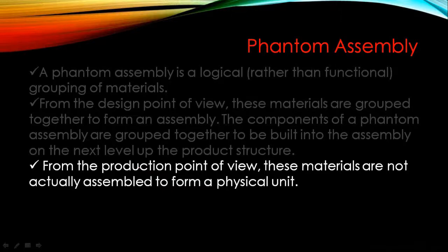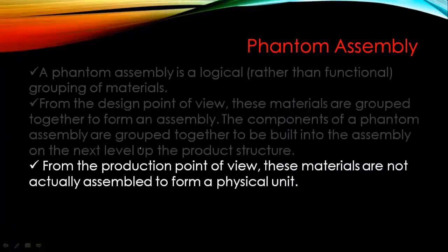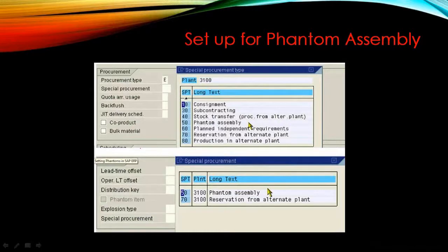The use of phantom assembly is that if there's a change in a BOM component — for example, the front wheel is being replaced with a new type — you just change it in one place and it will update everywhere this phantom assembly is used. To configure this in SAP, there are two requirements: first, in the material master you need to set the special procurement key to 50 (phantom assembly); and second, you need to set the same in the BOM item.